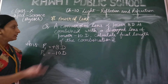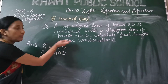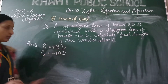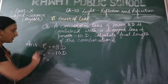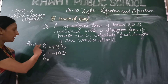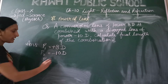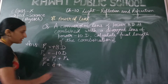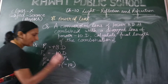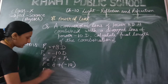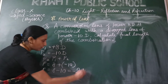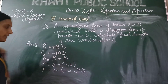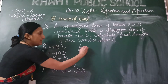First of all, we will find out the total power of the combination, then we will find out the focal length. As we know, the power of the combination is equal to the algebraic sum of the powers of the individual lenses: P equals P1 plus P2. So P is 8 plus minus 10, giving us minus 2 diopter. The resulting power of the combination is minus 2 diopter. We can easily find out the focal length: F equals 1 upon P.